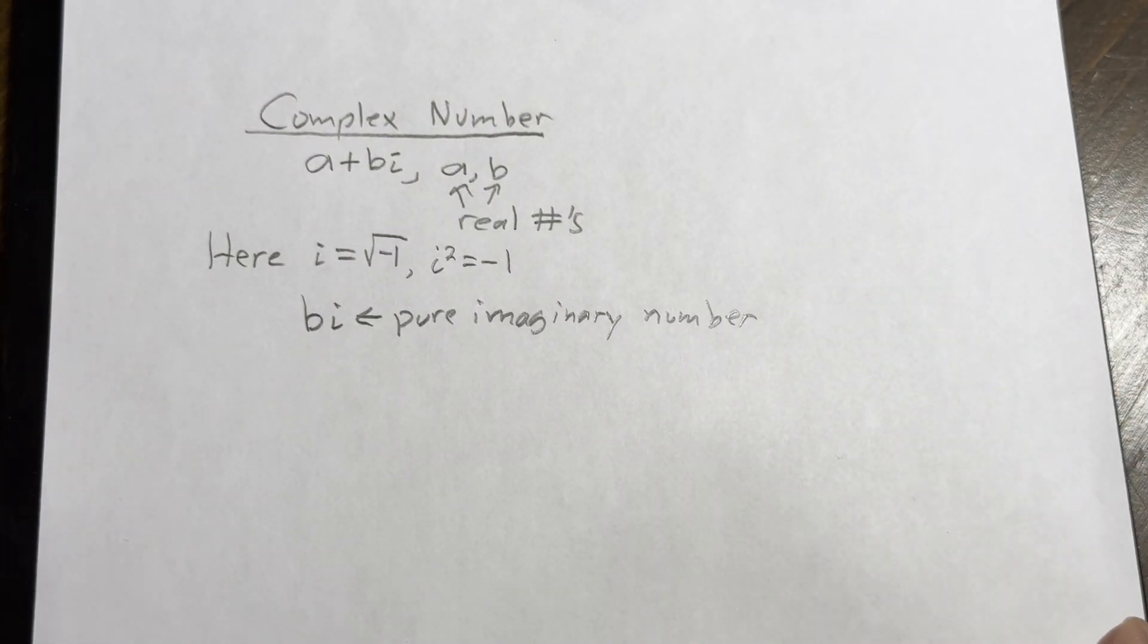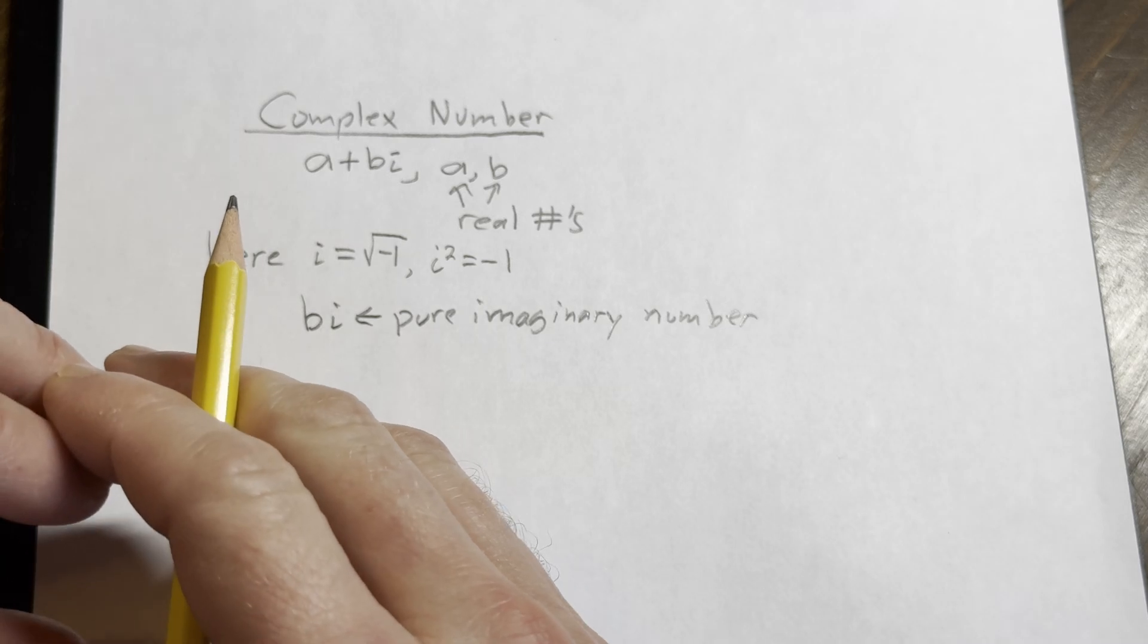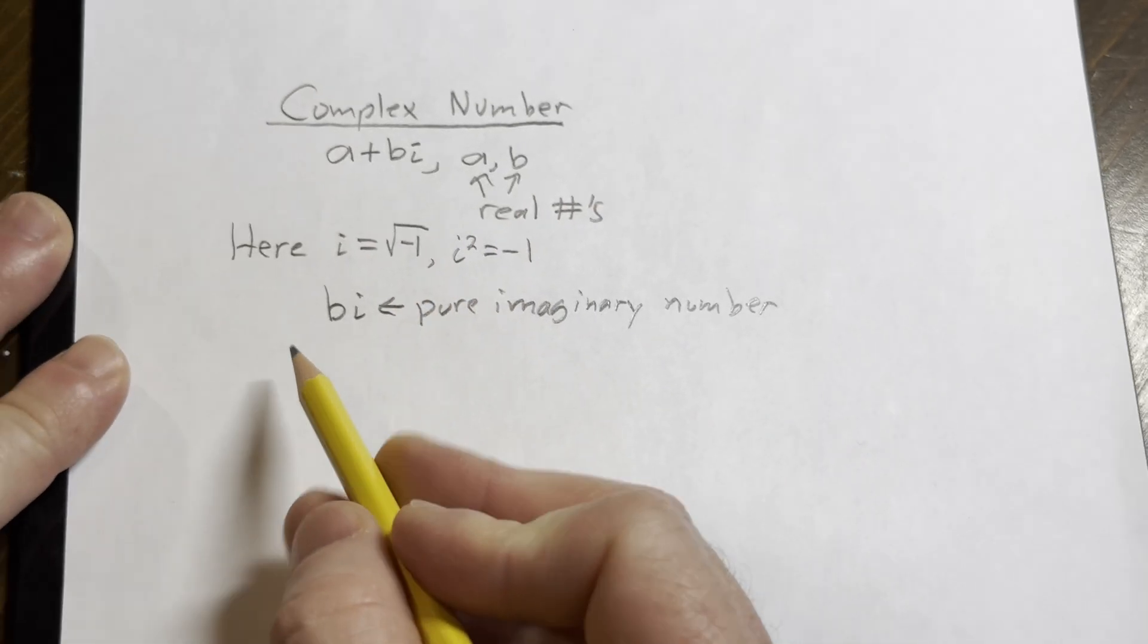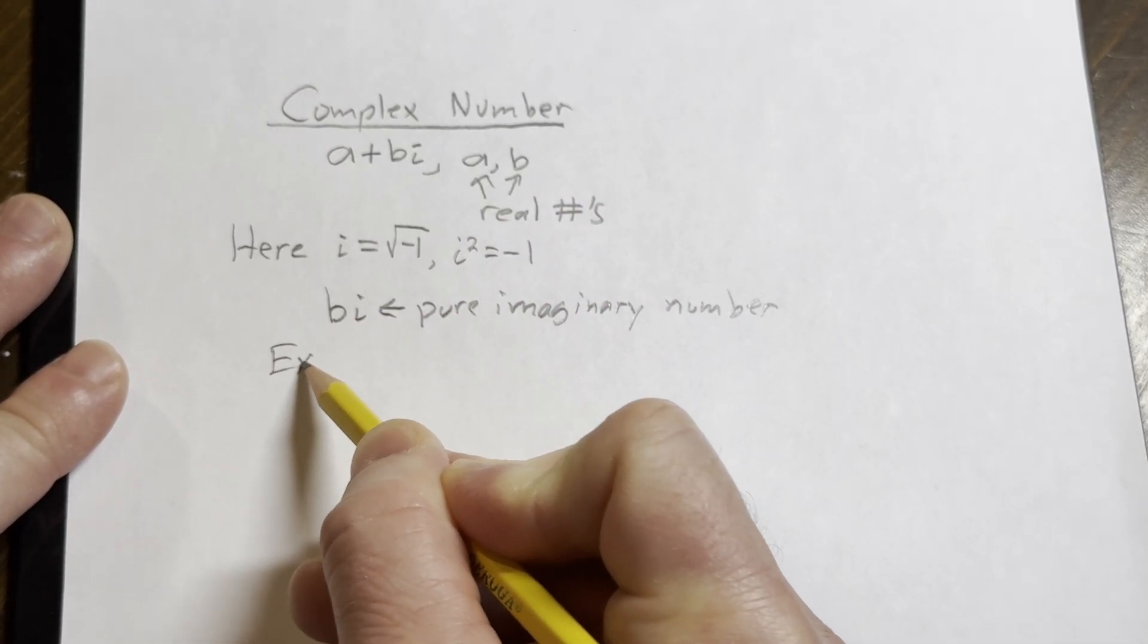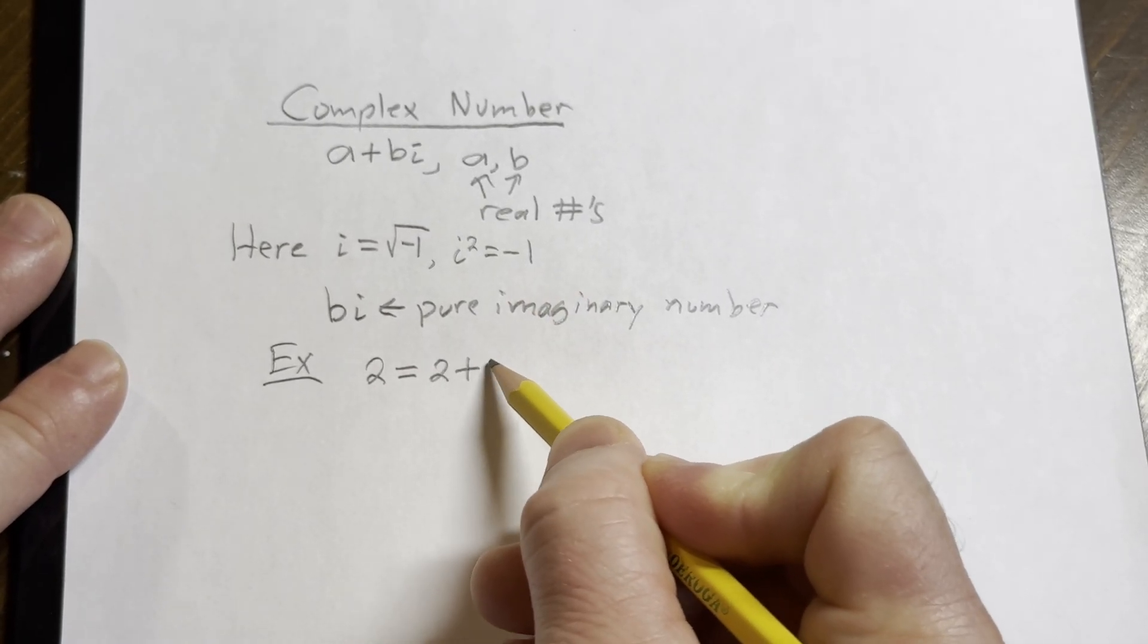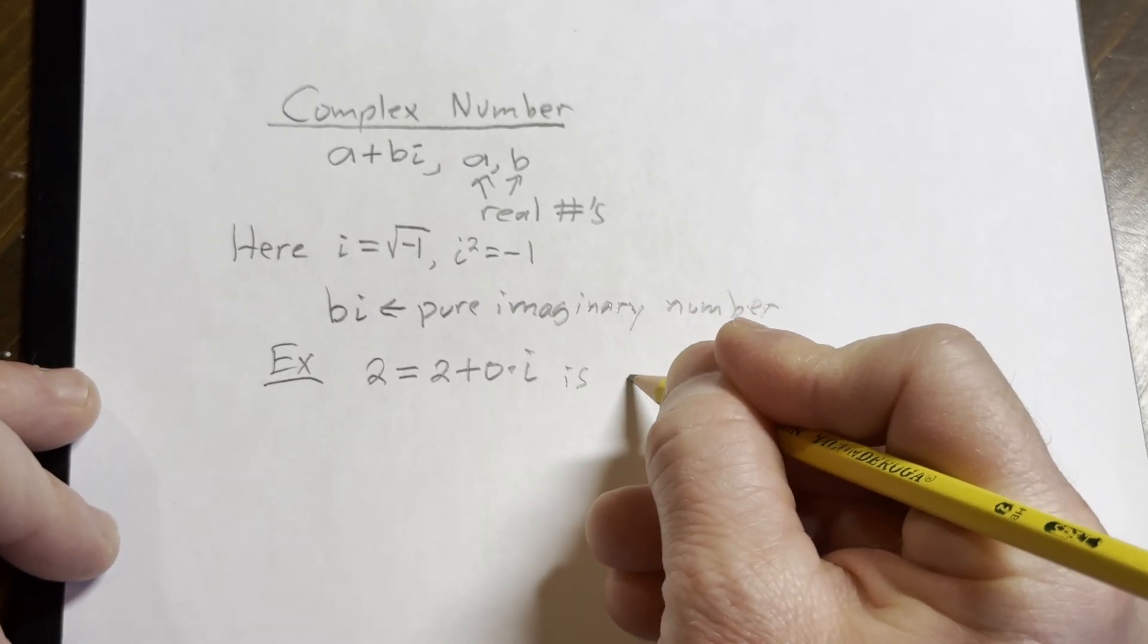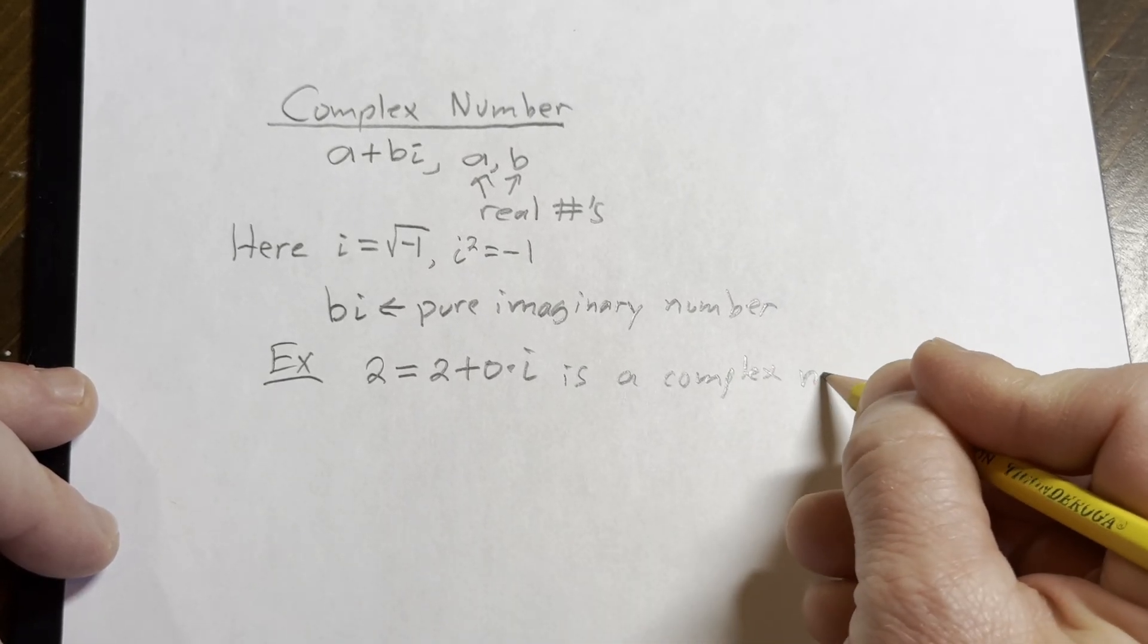So basically we're taking all the real numbers and extending them, making them bigger in some sense. Let's look at some examples. The number 2 can be written as 2 plus 0 times i. So the number 2 fits our definition of complex number, so it is a complex number.